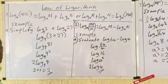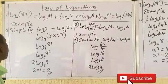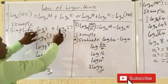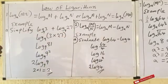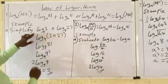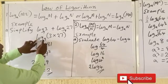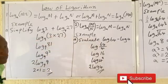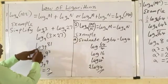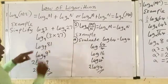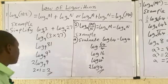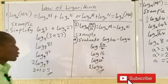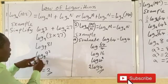Let's look at an example: simplify log base 9 of 3 plus log base 9 of 27. Both have the same base, so we pick one base and write log base 9 of (3 times 27). 3 times 27 equals 81, so we have log base 9 of 81. Now 81 is the same as 9 raised to power 2.